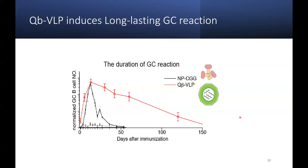An interesting observation is that Q-beta immunization induces a long-lasting GC reaction, which is not the same as immunization with regular protein antigen. Long-lasting GC is a common feature of viral infection, but not typical of immunization or vaccination. This phenomenon is intriguing because GC is believed to make high-affinity antibody. So if GC can produce high-affinity antibody to regular protein antigen in a short time, why does it take so long to produce high-affinity antibody to virus or Q-beta? There must be something interesting here.